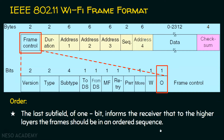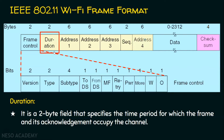Now let's move on to the next field of the IEEE 802.11 Wi-Fi frame format, which is the duration field. Duration is a 2-byte (16-bit) field that specifies the time period for which the frame and its acknowledgement can occupy the channel.